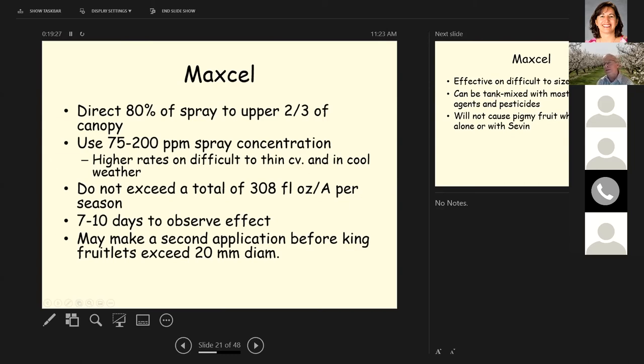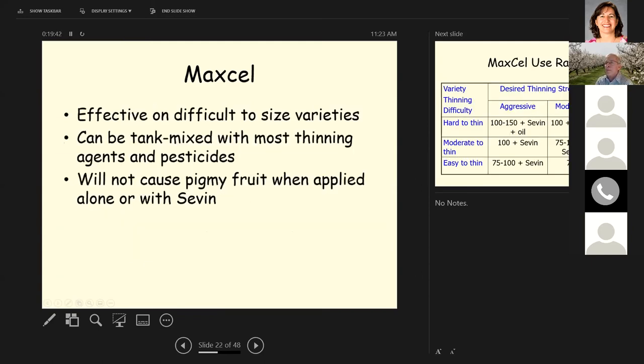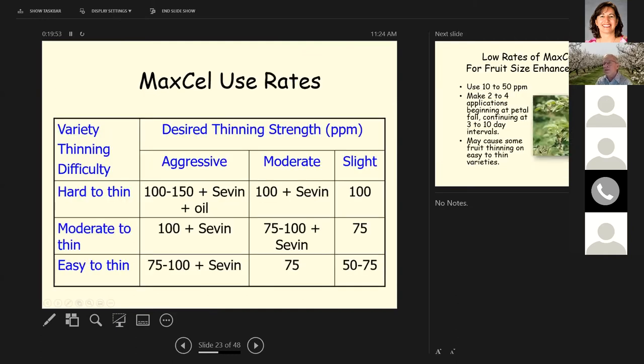And like with the other thinners, it takes about seven to 10 days to observe the effect. Depending on the temperature, the observed effect or thinning will be a little faster if it's hot, a little slower if it's cool. And make a second application before king fruit that succeeds 20 millimeters in diameter. This is effective on difficult to size varieties. Can be tank mixed with most thinning agents and pesticides. Won't cause pygmy fruit when applied alone or with seven.